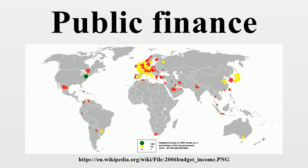Road tax, vehicle excise duty, registration fee, and vehicle licensing fees are examples of transport-related taxes. Other types include gift tax, duties, corporate income tax on corporations, wealth tax, and personal income tax. Governments, like any other legal entity, can take out loans, issue bonds, and make financial investments.